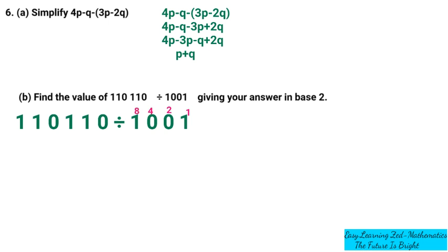Now let me go to the dividend, 110110. The 0 on the far right has a place value of 1. The next 1 has a place value of 2s. The next 1 has a place value of 4s. The 0 has a place value of 8s. The next 1 has a place value of 16s. And the last 1 on the left has a place value of 32s.